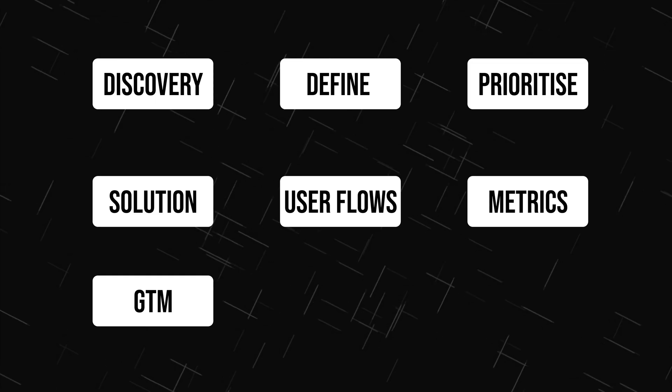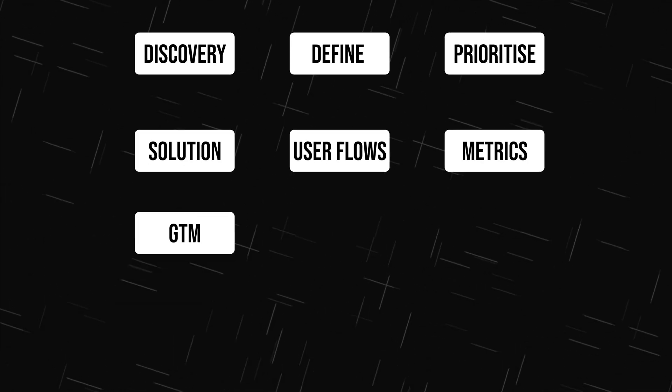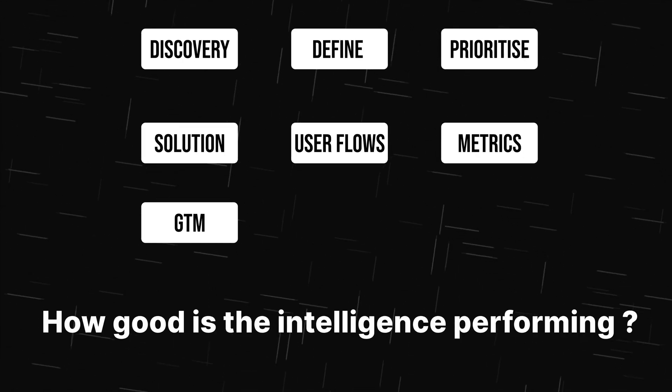In this process too, you must first do discovery on whether the problem is solvable through AI, then define how well you can solve it, identify pain points, prioritize them, move to the solution space, put an intelligent layer there, make designs, and measure with metrics that an LLM can again help with. There is a lot of common ground — the only additional requirement for an AI-native PM is understanding model behavior and intelligence at a technical level.